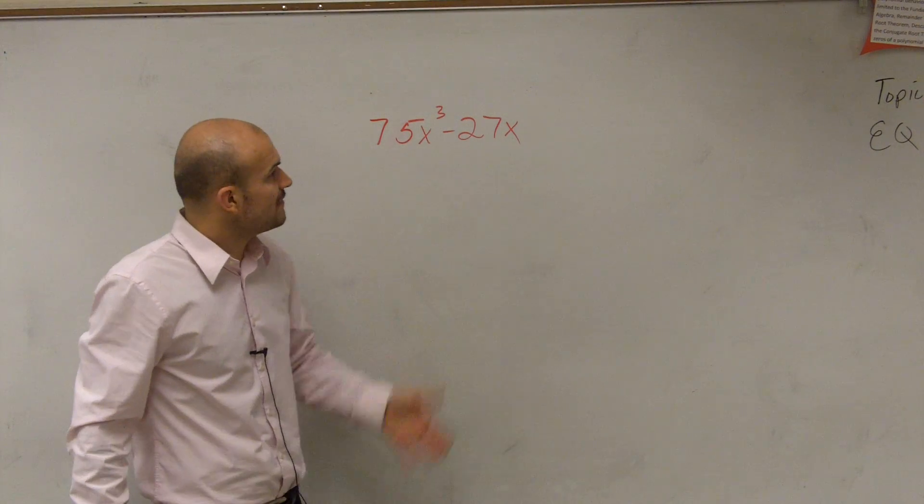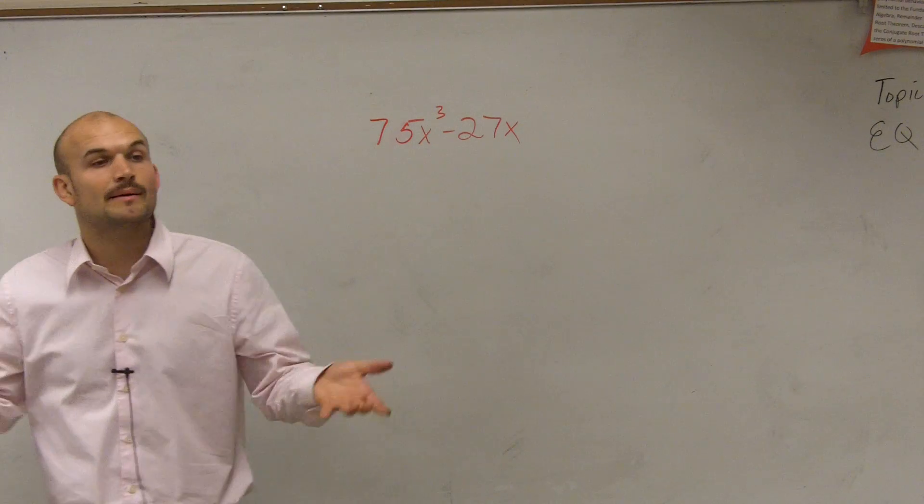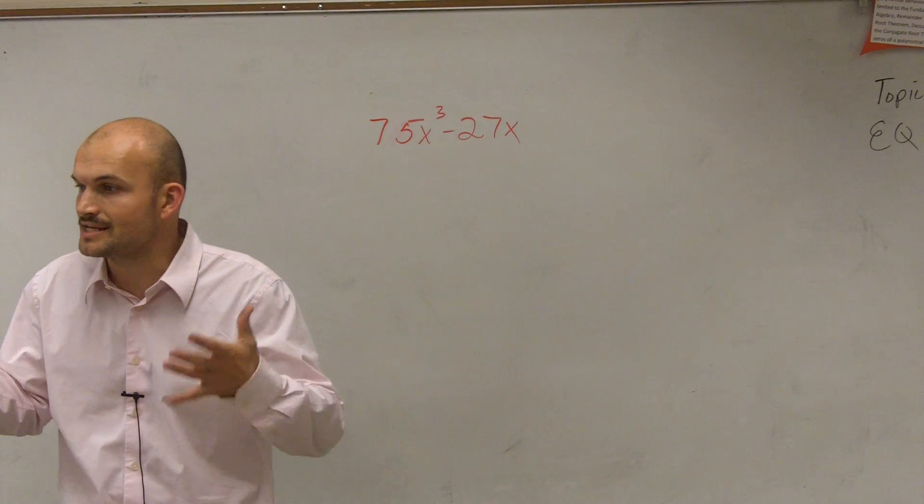All right, so for this problem we have 75x³ - 27x. And remember, we want to factor, so we need to write this as a product of its factors.